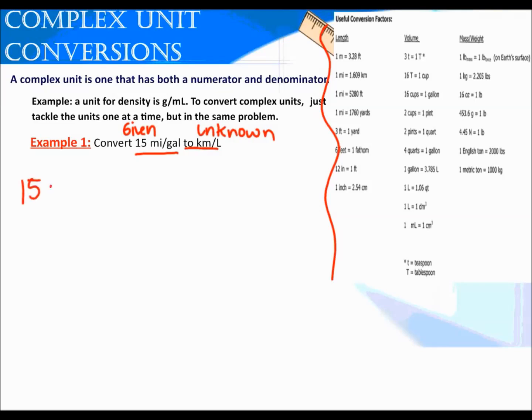I start, as always, with my given: 15 miles per gallon. I need to find a conversion factor that is going to change one of these units. I'm going to start with the distance unit, trying to get my miles to kilometers first. One mile equals 1.609 kilometers. The one mile goes on the bottom, the 1.609 kilometers goes on top. It has to go on the bottom so that miles cancel. Now I have one unit that I want, which is the kilometer. But if I solved here, I would have kilometers per gallon.